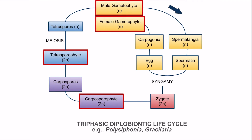The last type of life cycle is the triphasic diplobiontic life cycle. It is found in Polysiphonia and Gracilaria, which are red algae belonging to the class Rhodophyceae. In this type of life cycle, there are also three phases: one is the gametophyte, second is the carposporophyte, and third is the tetrasporophyte.